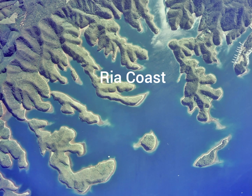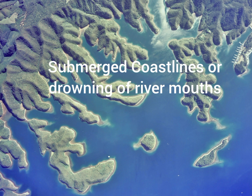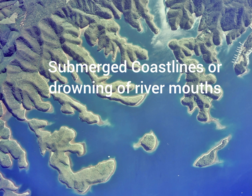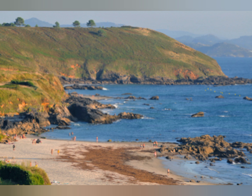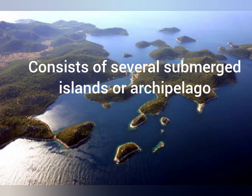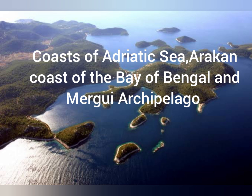The second type of coastline are the ria coasts. Ria coasts are submerged coastal regions caused by the drowning of river mouths when the river empties into the sea. Ria coasts also provide a lot of inlets for harbors. Then there is the Dalmatian coast. There are some mountains and ridges which run parallel to the coast; when they are submerged, these mountains and ridges produce very narrow inlets and chains of islands — these are called Dalmatian coasts. Dalmatian coasts have several islands and even form archipelagos. Examples include the Arakan coast of the Bay of Bengal, the Murgwe archipelago, and the Adriatic Sea which has many archipelagos and submerged mountain portions forming islands.